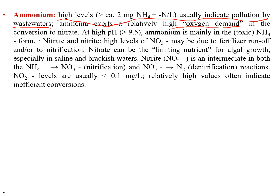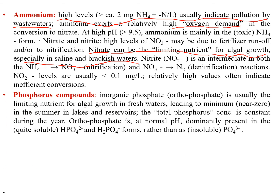High nitrate levels may be due to fertilizer runoff or nitrification, and nitrate can be a limiting factor for algal growth, especially in saline and brackish water. For phosphorous compounds, inorganic phosphate like orthophosphate is usually the limiting nutrient for algal growth in fresh water. Inorganic phosphate reaches near-zero levels in summer in lakes and reservoirs. The total phosphorus concentration remains relatively constant during the year, and orthophosphate at normal pH is dominantly present in soluble form.